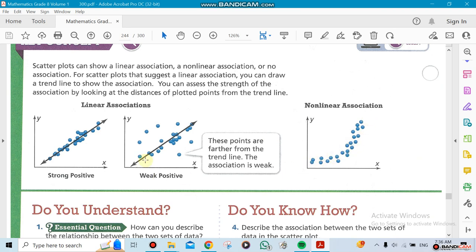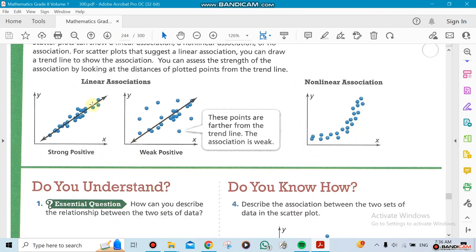Strong positive, weak positive. So notice that if I draw a line, most of my dots are closer to my line. Here you can see that dots are a little bit far away from the line. That means there is a positive thing because we are going up, but it's weak.